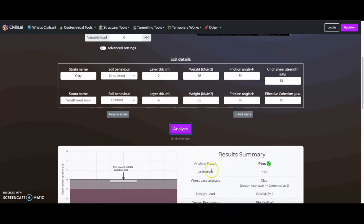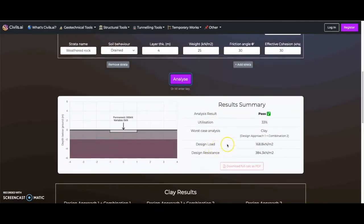Our results will show whether this section passes our checks. If the section passes our checks, the design resistance exceeds the design load. The results also show the degree of utilization, where 100% represents the design resistance is equal to the design load and the section is failing.